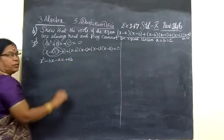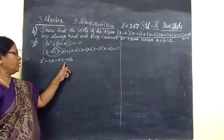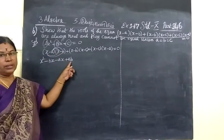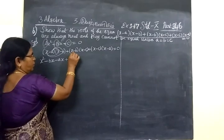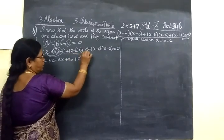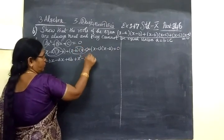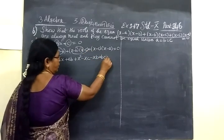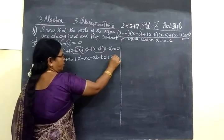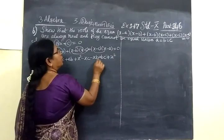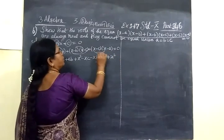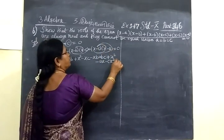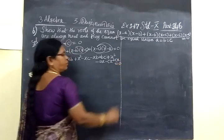These signs are very important. For the second bracket: x² minus xc minus xb, then negative times negative gives plus bc. Then for the next term: x² minus ax minus cx, then negative times negative gives plus ca, equal to zero.